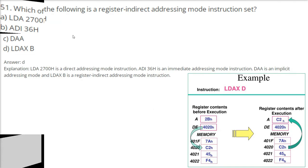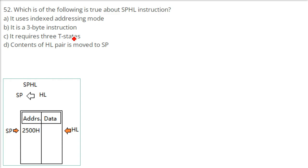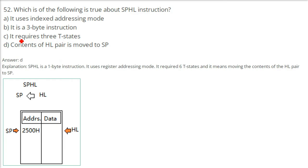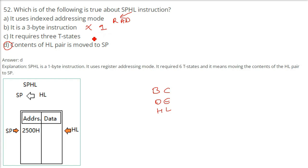Which of the following is true about the SPHL instruction? SP stands for stack pointer and HL is the general purpose register pair. The answer is that the content of the HL pair is moved to SP. SPHL is a 1-byte instruction that uses register addressing mode, requires 6 T-states, and moves the contents of the HL pair to the stack pointer.